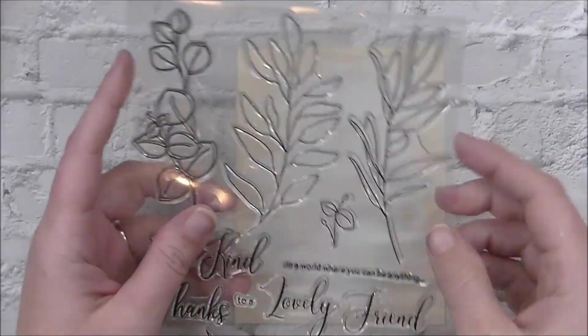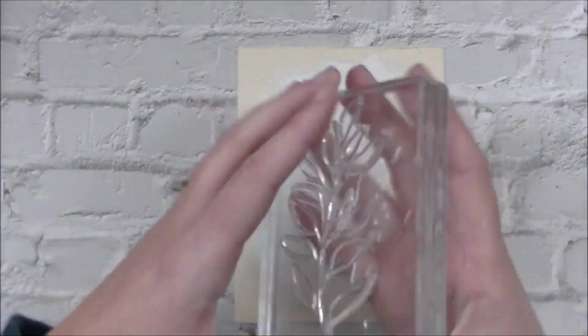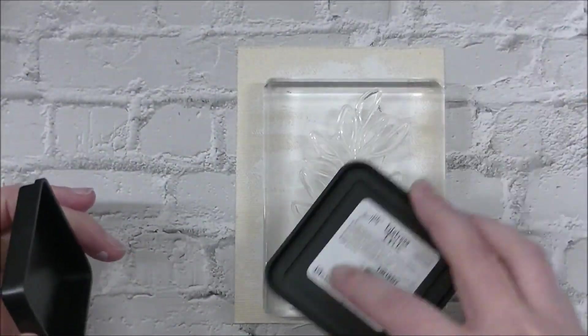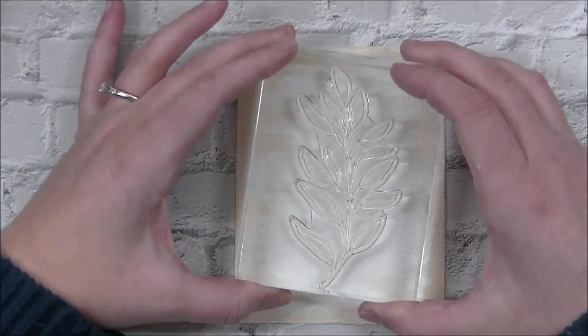I thought this one would be perfect, so I brought it out and grabbed this leaf from the center. I don't think I've ever colored this little leaf stem up. I'm going to ink it up with some Antique Linen distress ink and stamp that down right into the middle.